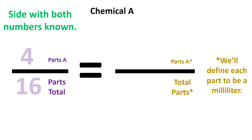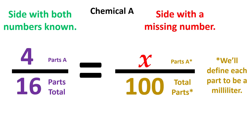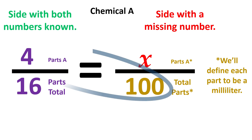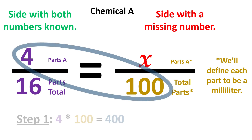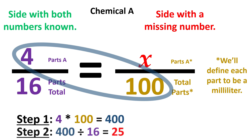For chemical A, the left side of the equal sign will be 4 over 16 and the right is X over 100. Step 1 is to multiply 4 and 100, which gives us 400. Step 2 is to divide our new product of 400 by the remaining number, which is 16. This equals 25 milliliters.